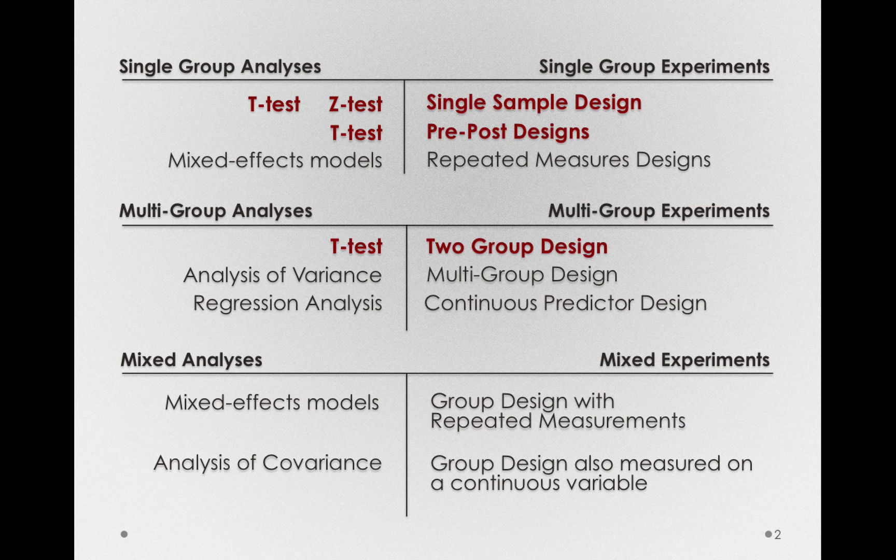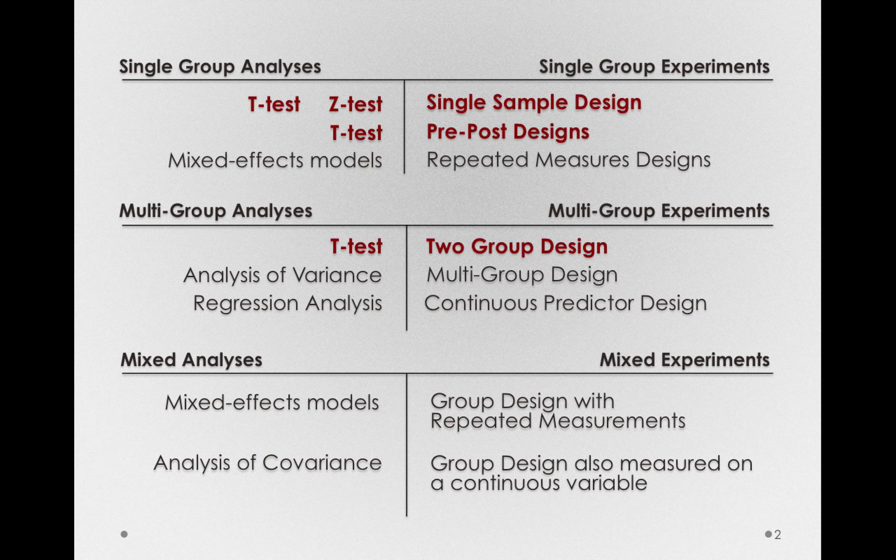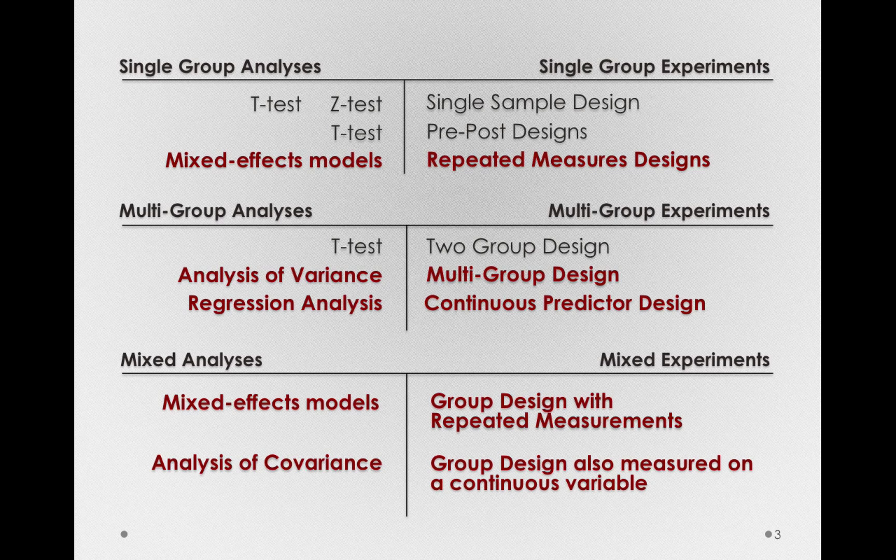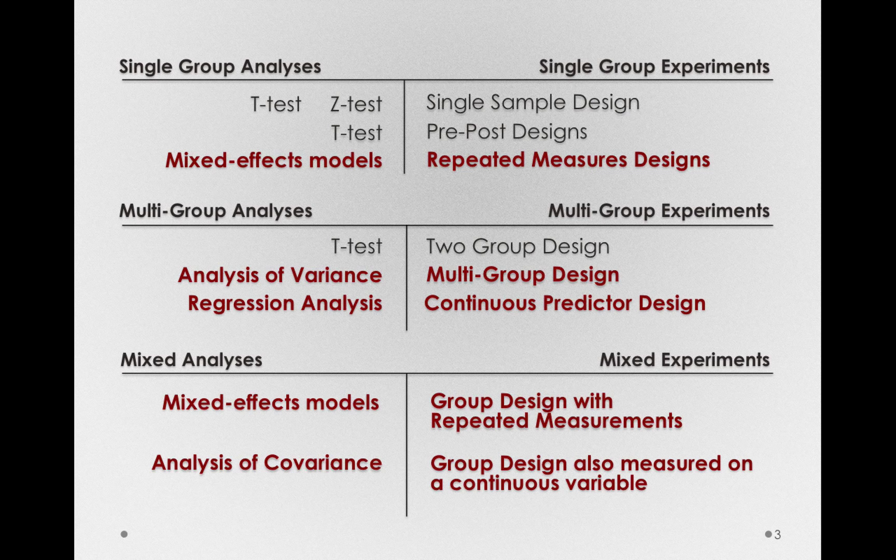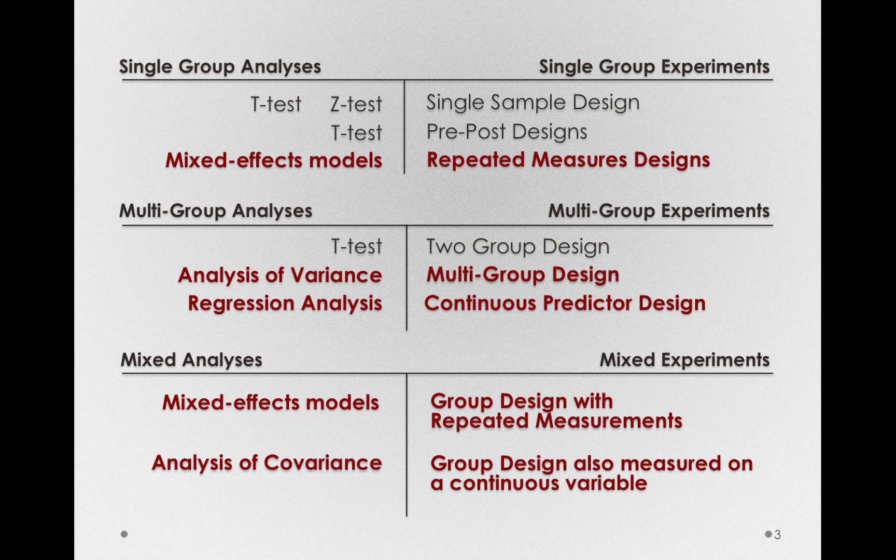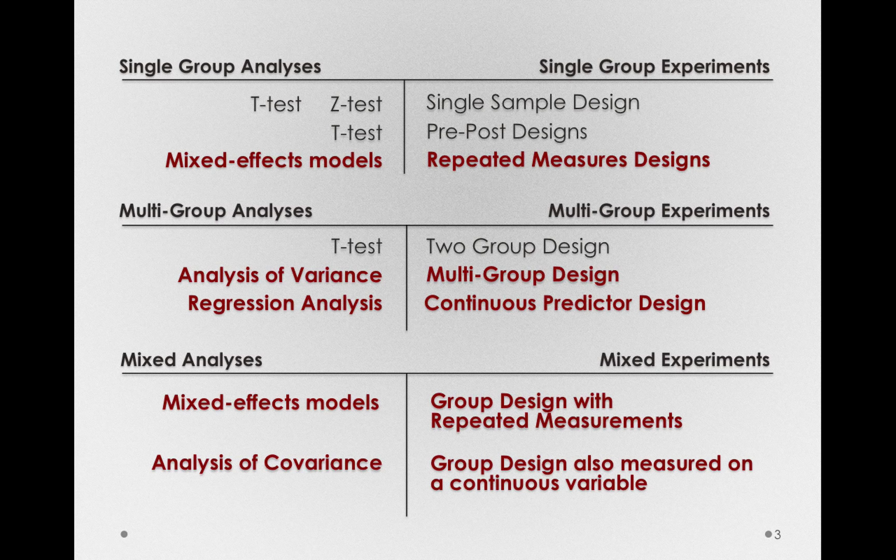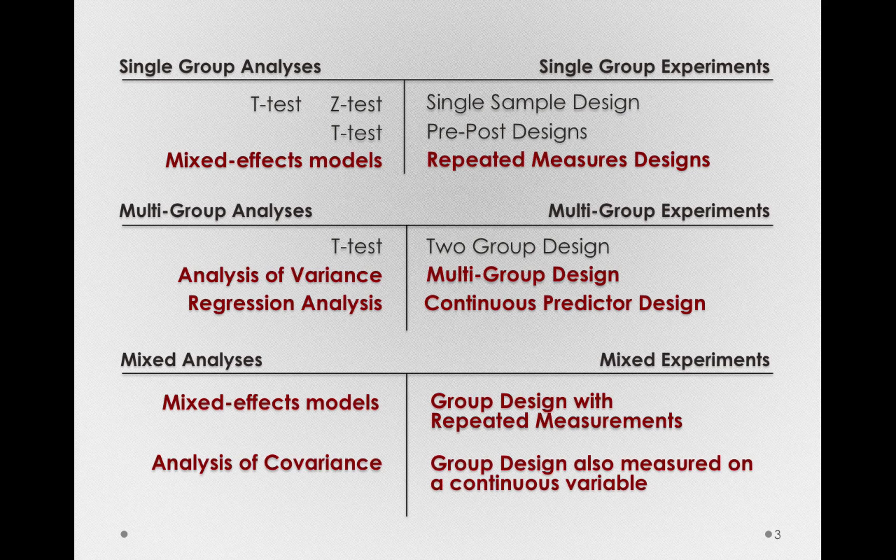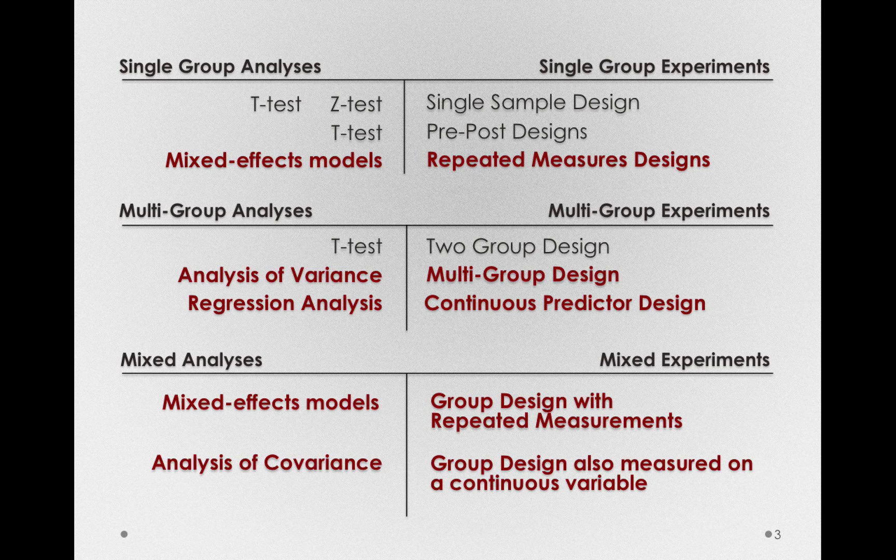What we'll be doing in this module and the upcoming modules is looking at mathematical models that allow us to tackle these other types of designs. That is repeated measures designs when we have multiple measurements for a person over time or over different conditions, multi-group designs when we have multiple different groups or conditions that people are in, or even continuous predictor designs. Designs in which our predictor, that is the thing that we're actually predicting from, is quantitative rather than some type of group measurement.